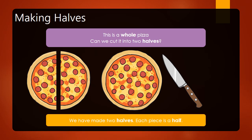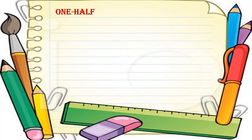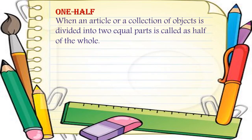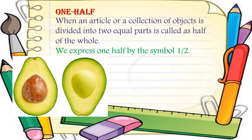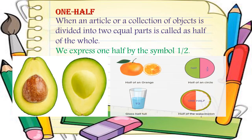What is one half? When an article or a collection of objects is divided into two equal parts, each part is called half of the whole. We express one half by the symbol one by two, or one-half. You can see avocado cut into two equal parts. Here you can see different pictures of half: half of an orange, a glass half full, half of a circle, half of a watermelon.